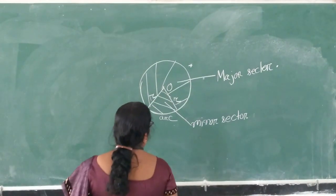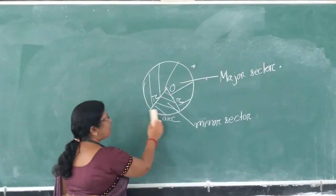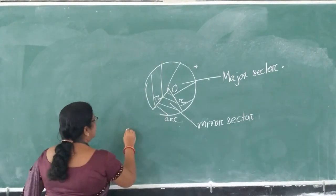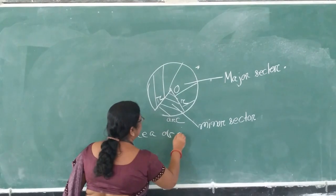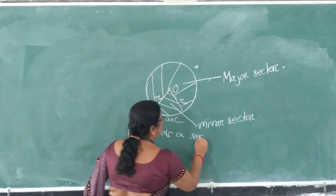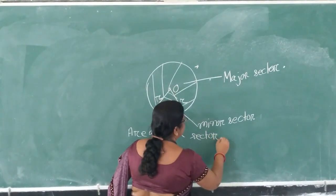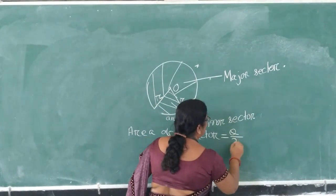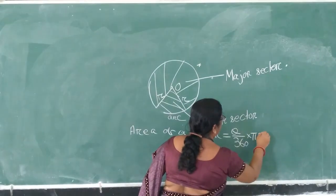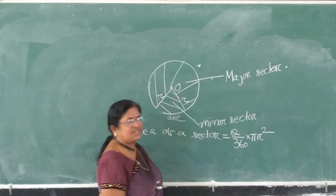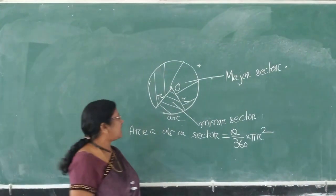So, the formula called area of the sector. This angle is called the central angle of the sector.